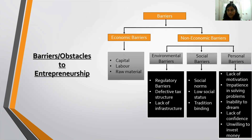The third economic barrier is raw materials. If raw materials are not regularly available or if we have to rely on imported raw materials, it will affect production and increase costs. So capital, labour, and raw materials are the three economic barriers to entrepreneurship.